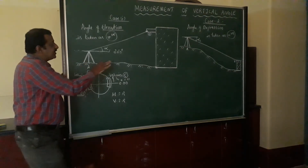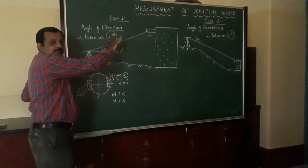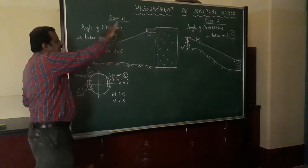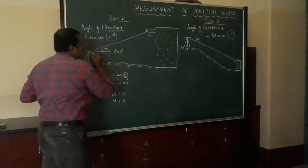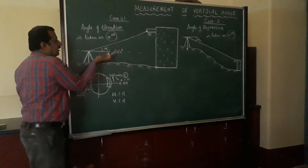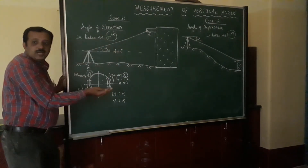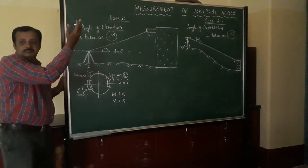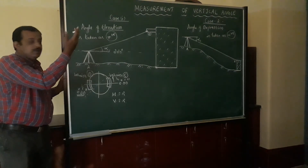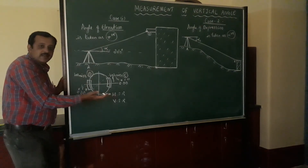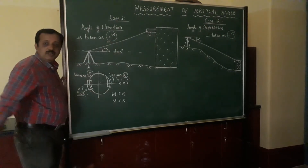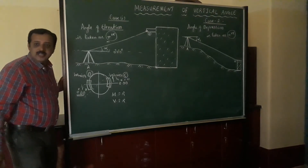This is the case of angle of elevation. Since it is an angle of elevation, the object is above the horizontal line of sight — the line of sight is directed upward. Since the line of sight is up, you take this angle as positive.